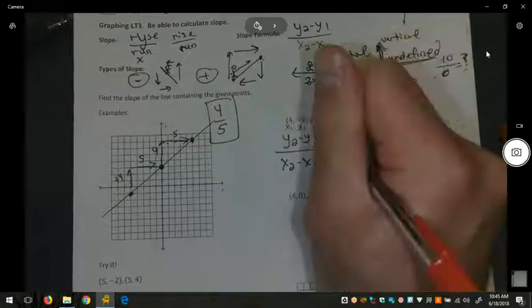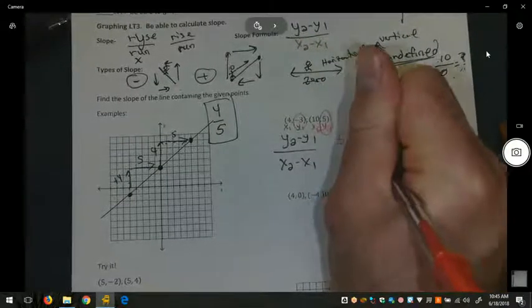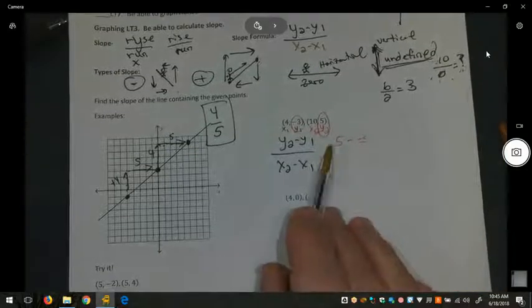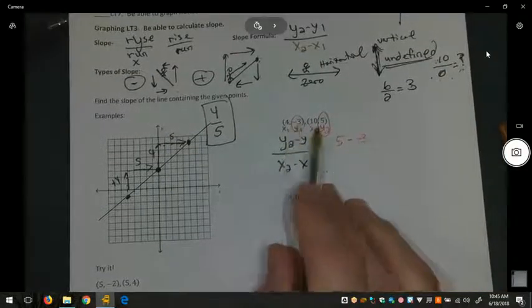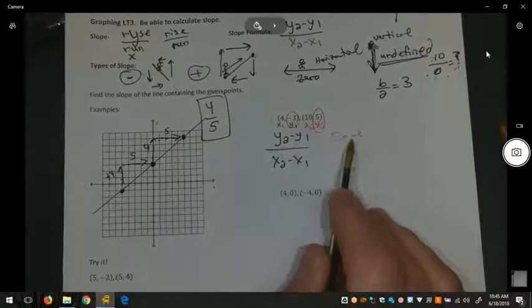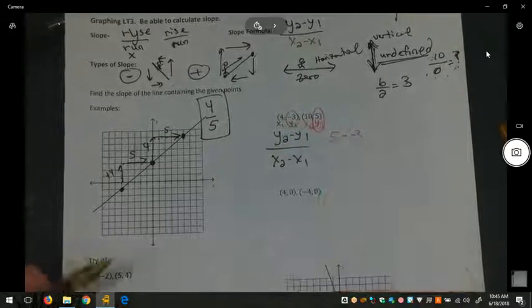But it does matter that when you've locked them in, you are consistent on how you subtract. So y sub two is five. So I have to do five minus negative three. One common mistake is people forget to put the negative.